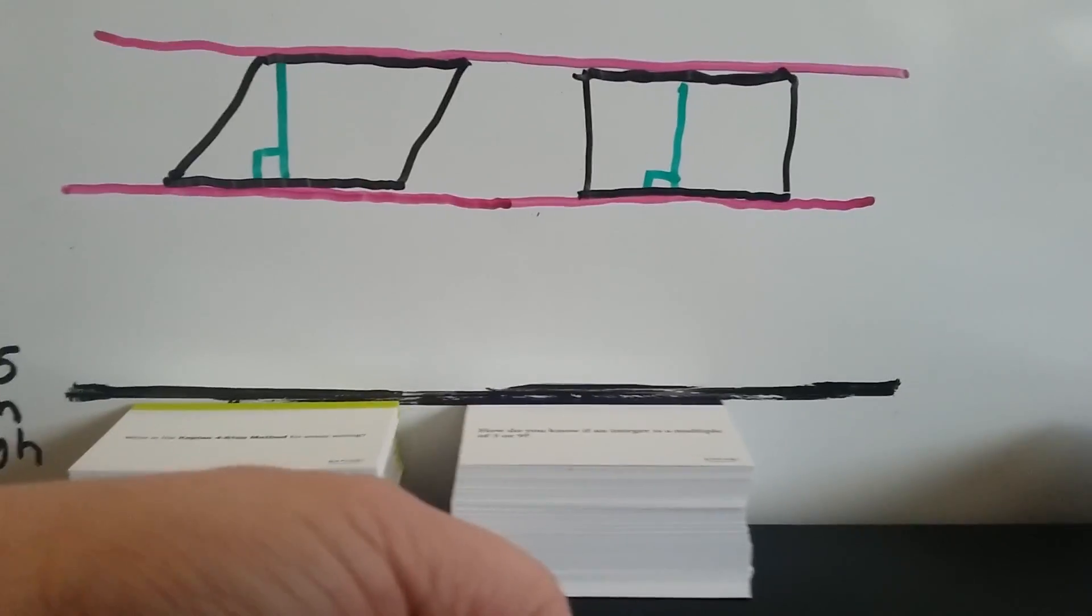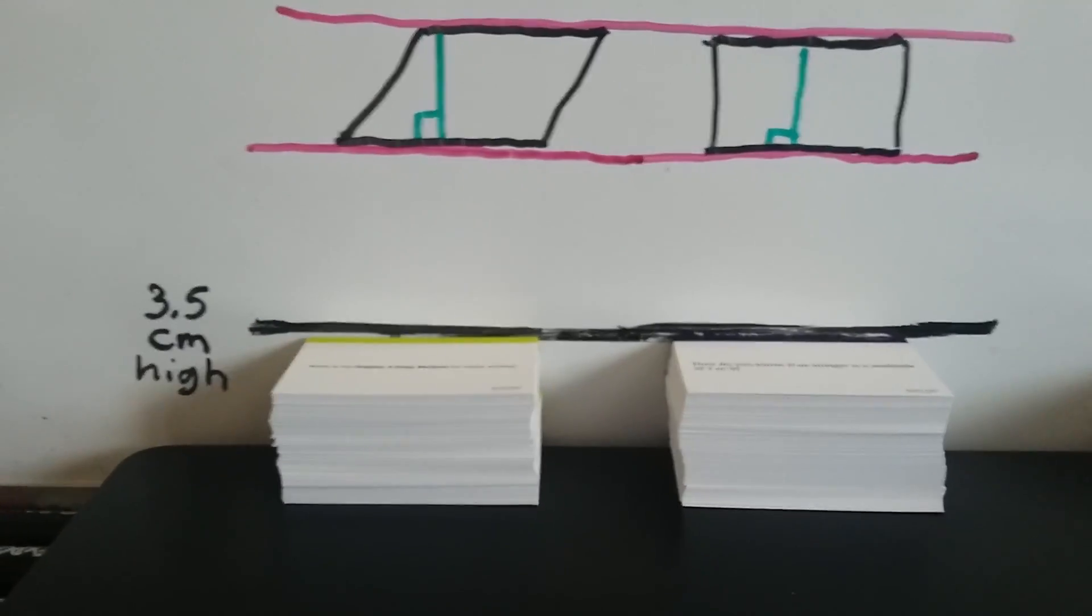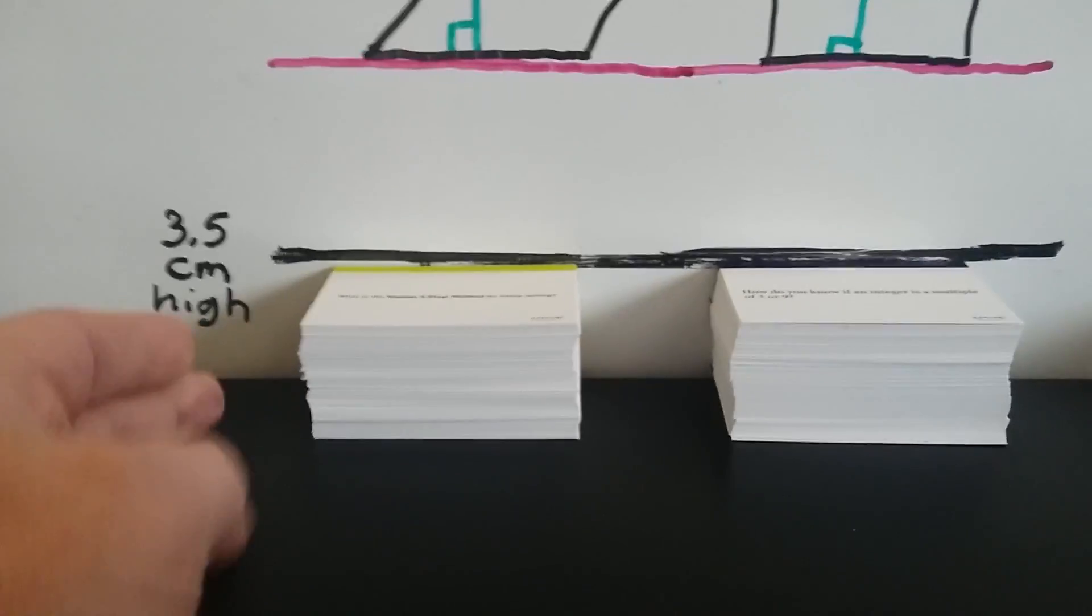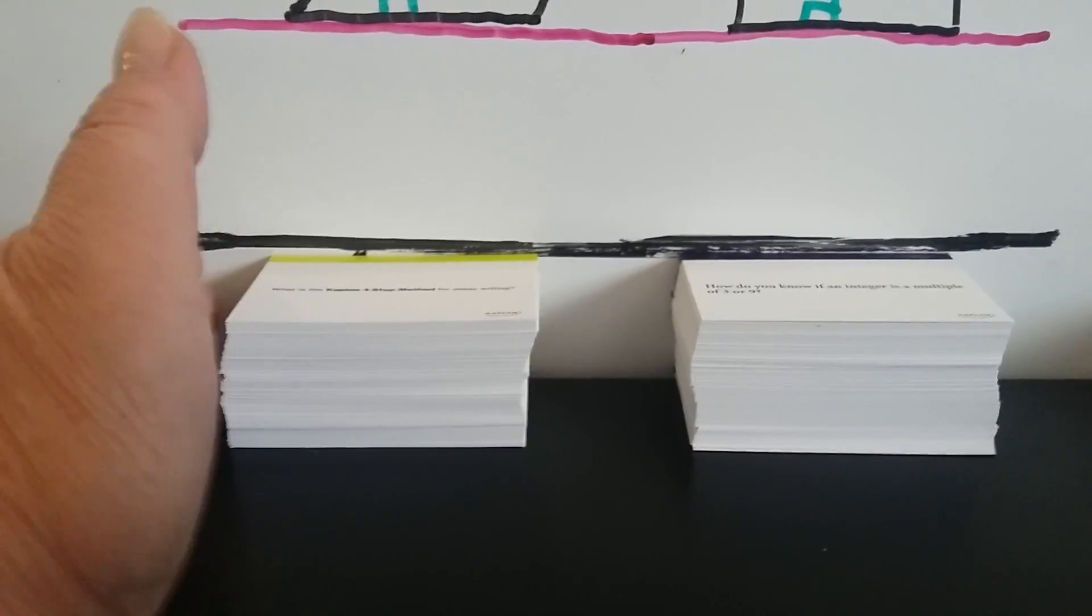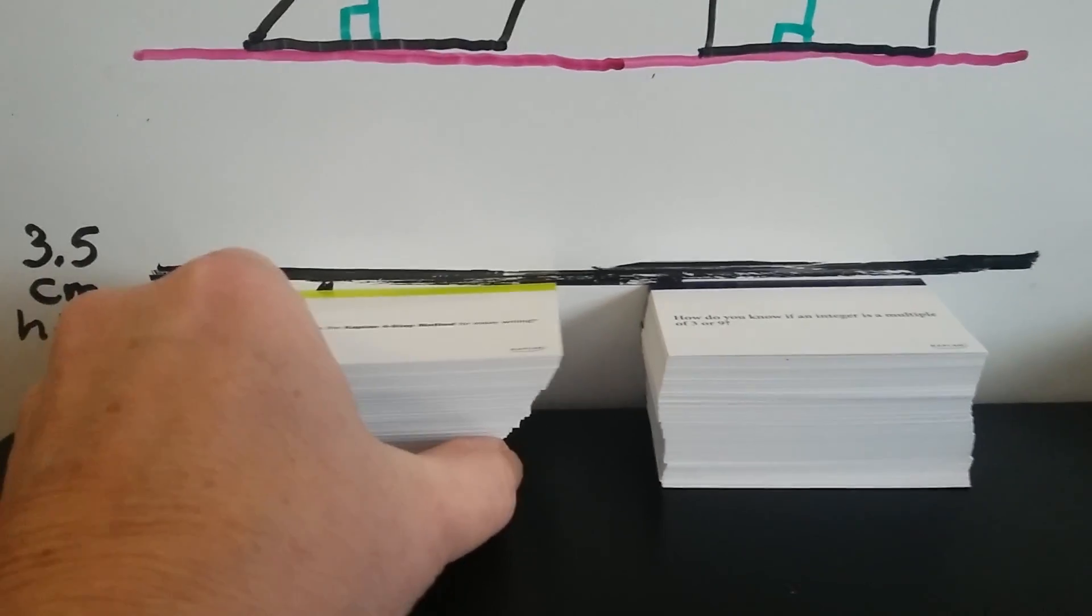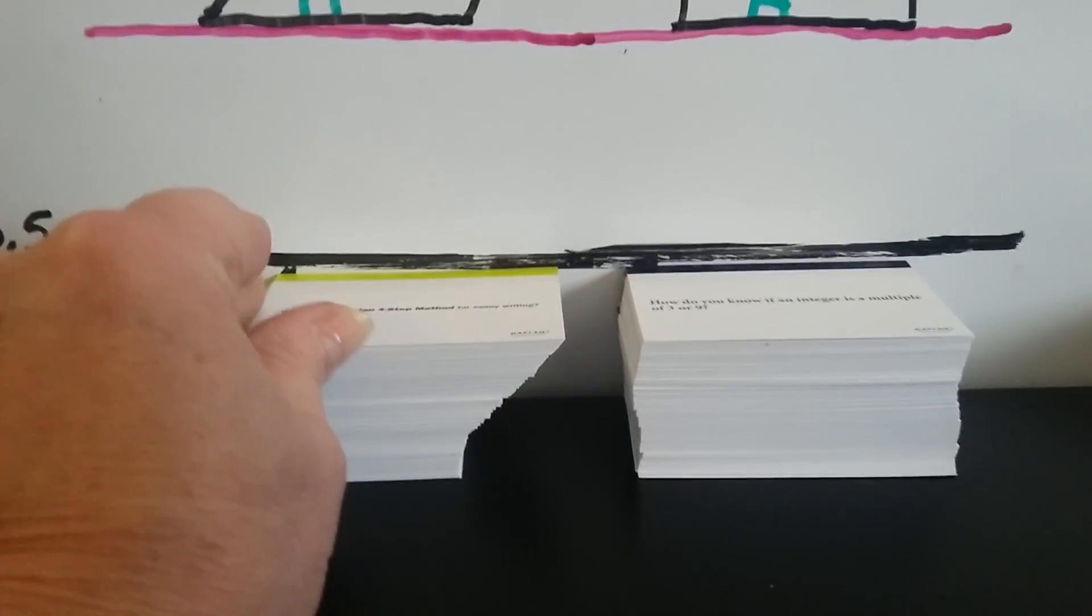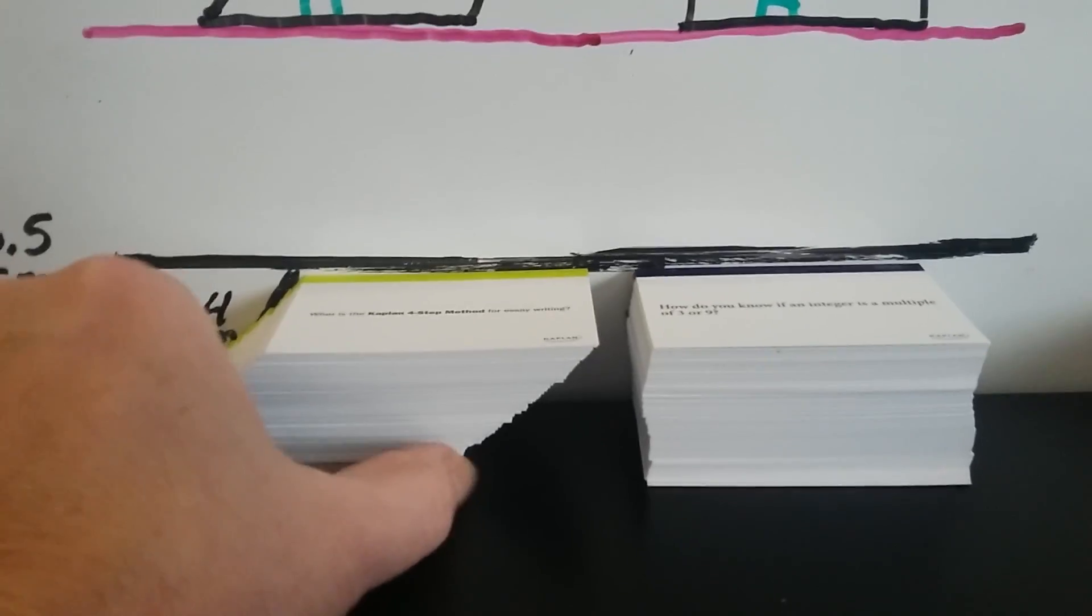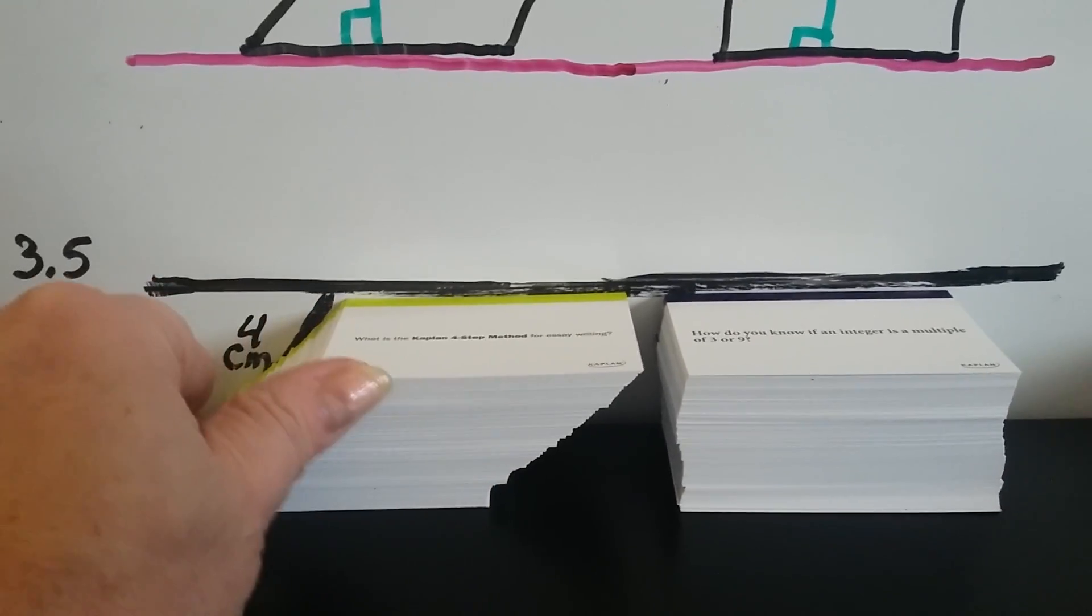But what happens when I take this yellow stack and slant it and make it oblique? Let's see if I can do this with my marker rolling away. So I'm going to tap this and make it into an oblique shape. We'll see what happens to its height.